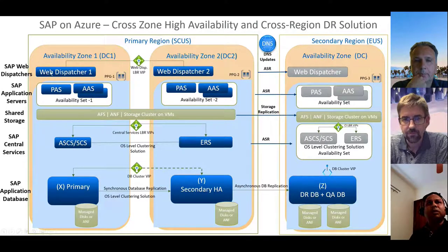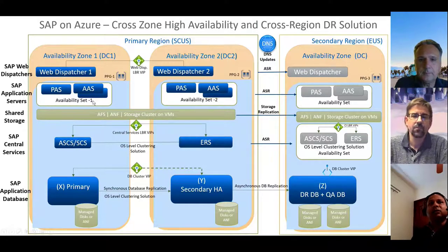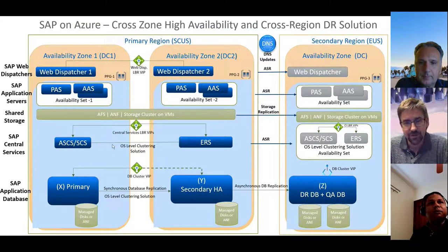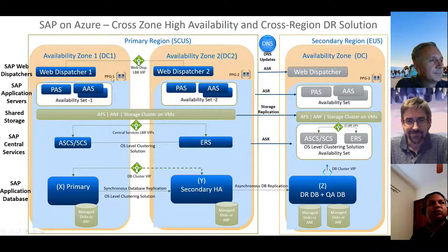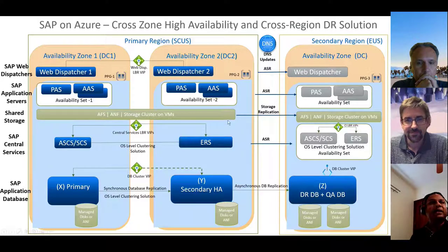Web dispatchers were deployed into two availability zones to load balance HTTP and HTTPS traffic onto the app servers. What is not shown is an SAP GUI — typically an on-premises user laptop connecting to the ASCS or SCS message server, which does load balancing onto app servers. For this particular customer, there were 16 SAP systems deployed using the same cross-zone stretch cluster construct: S/4HANA, BW, CRM, eWM, Portal, Fiori, Solution Manager, just to name a few.